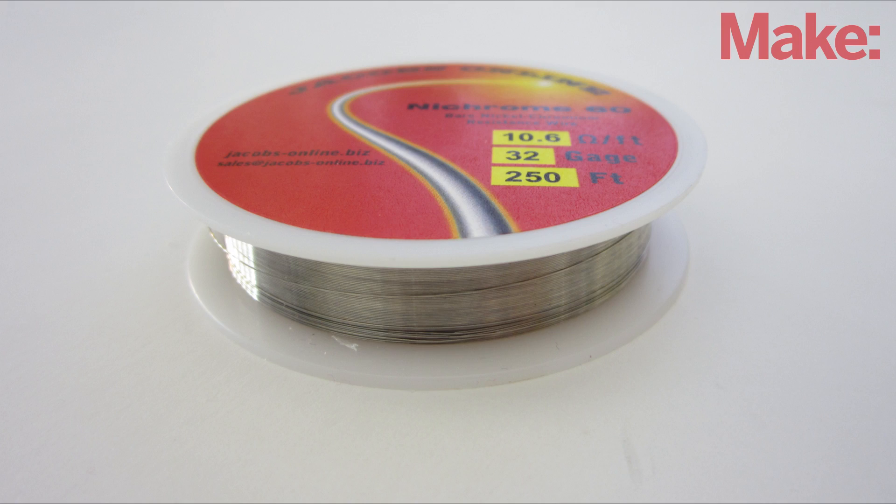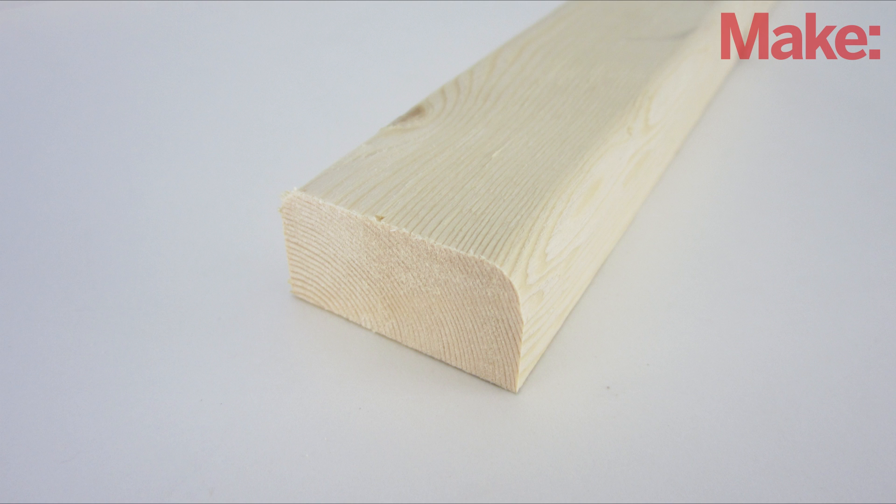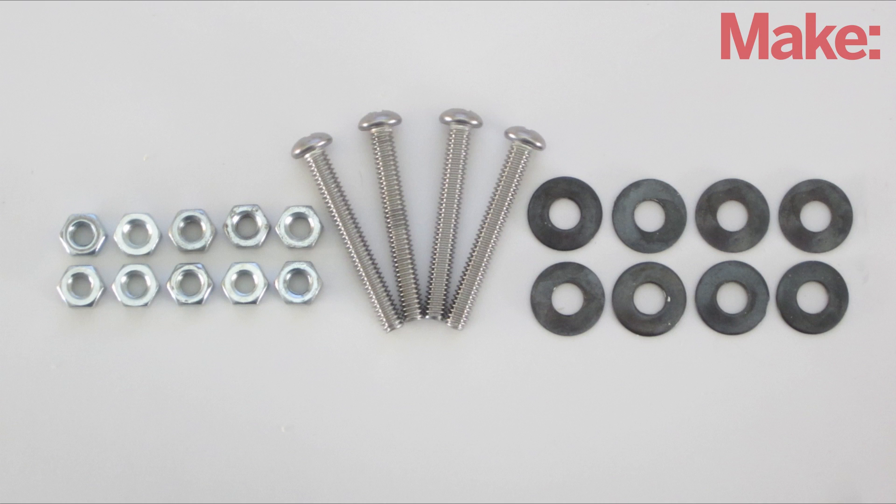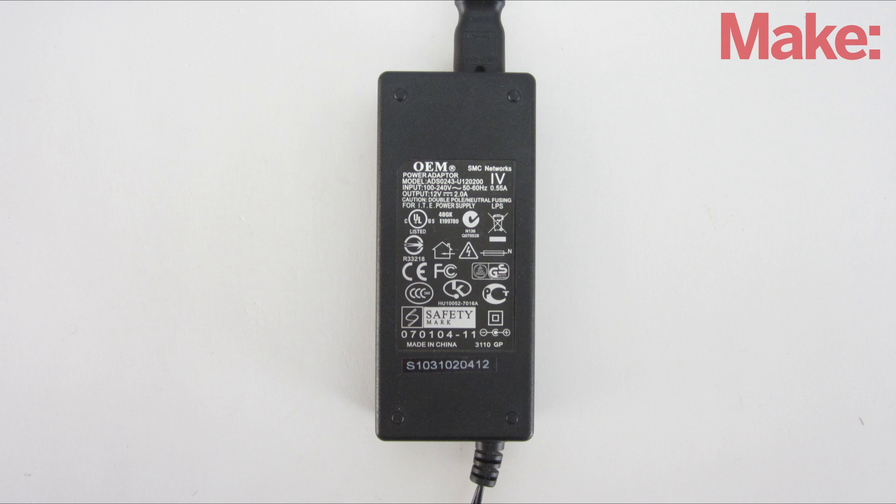To build the cutter, you'll need some nichrome wire, 3 feet of 1x2 lumber, 4 quarter inch bolts, 10 quarter inch nuts, 8 quarter inch washers, some rubber bands, and a large DC power supply.